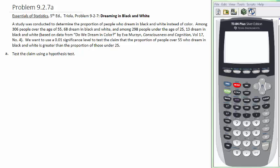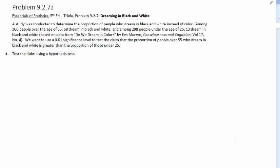We know that this is a hypothesis test, and we want to be able to identify the claim. I'm going to underline the claim: the proportion of people over 55 who dream in black and white is greater than the proportion of those under 25. This is a proportion problem because that's a piece of information that they give you.